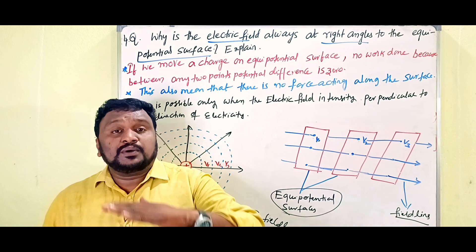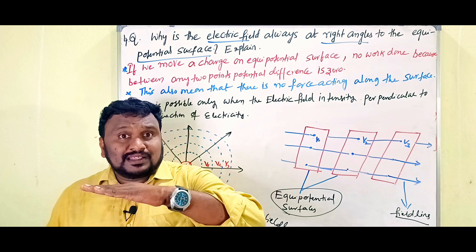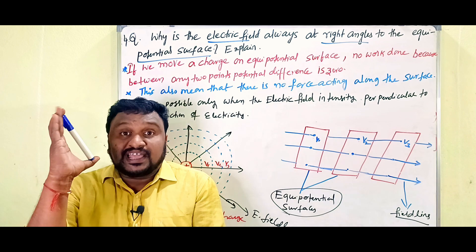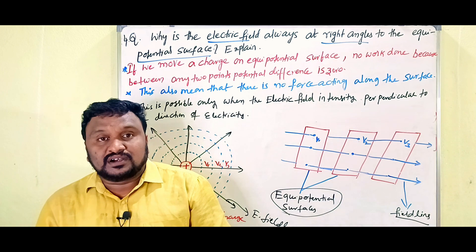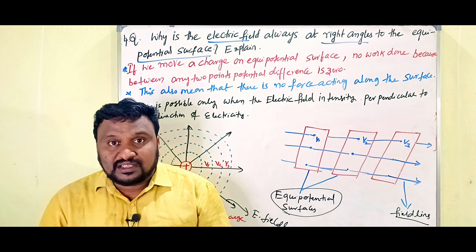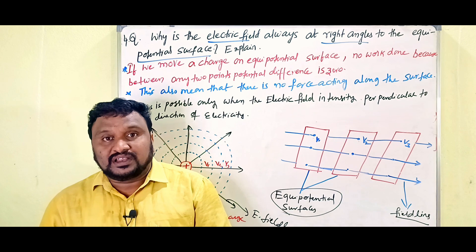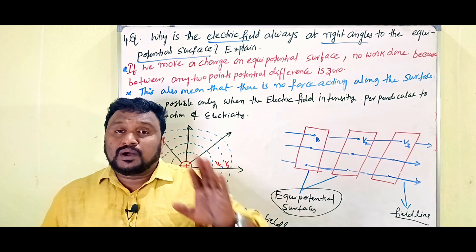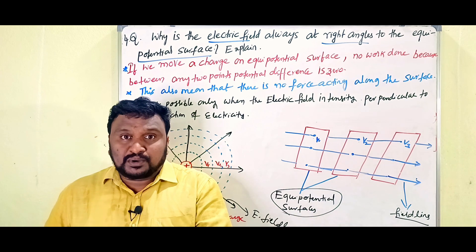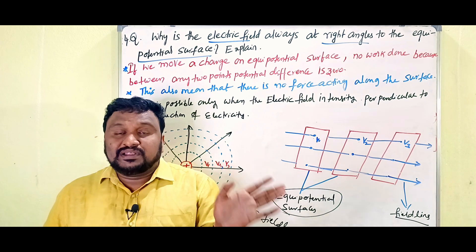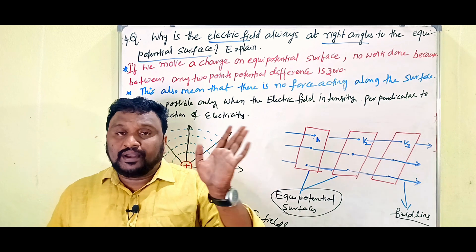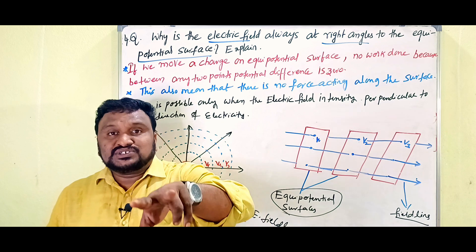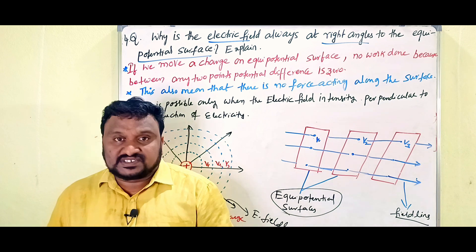This question is about why the electric field exists at a right angle to the equipotential surface. On an equipotential surface, every point has the same potential. That means at every point the potential is the same, and therefore there is no potential difference between any two points.